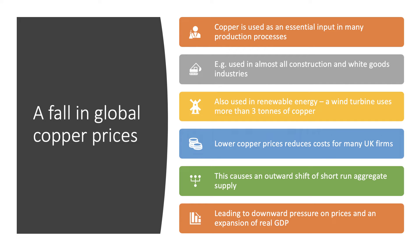Our second example is a fall in the world price of copper. Copper is used as an essential key input in many production processes — in nearly every building project, in making fridge freezers and washing machines, and increasingly in renewables. A wind turbine typically uses more than three tons of copper. So if global copper prices fall, that reduces costs for many UK firms. Since we rely on imported copper, falling costs cause an outward shift of aggregate supply, affecting many businesses across sectors.